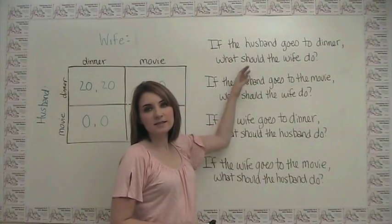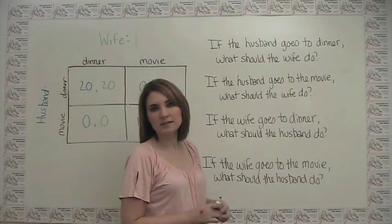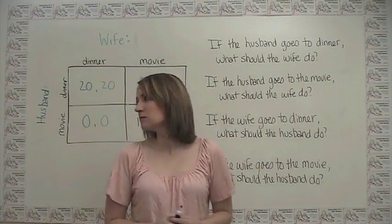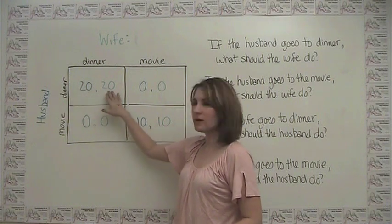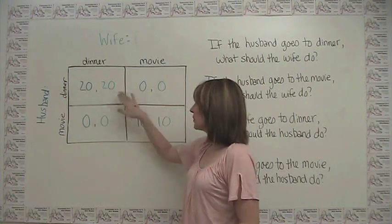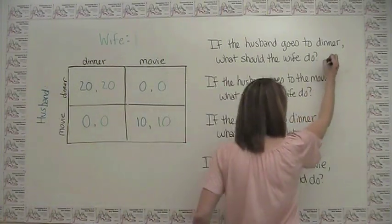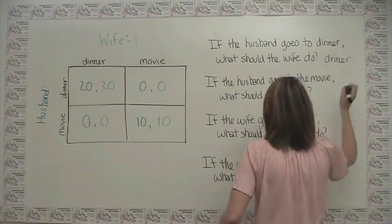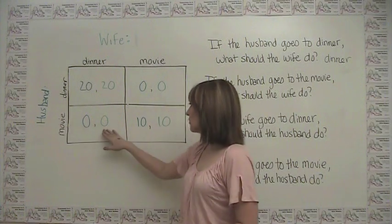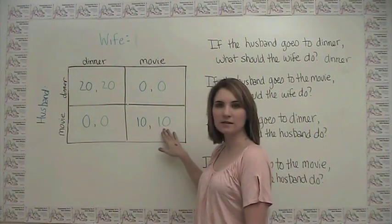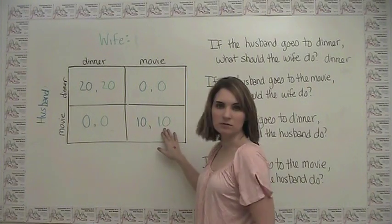Let's analyze this situation the same way we did the last one. If the husband goes to dinner, where should the wife go? The wife's payouts are in green. 20 is better than 0, so the wife obviously wants to follow him to dinner. If the husband goes to the movie, the wife has a payout of either 0 or 10 — it's a better option for the wife to go to the movie.